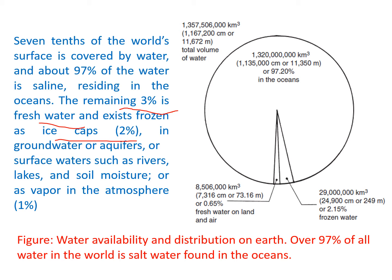This figure shows water availability and its distribution on the Earth's surface. We can see that 97% of Earth's water is saline or salty water residing in the ocean. Only 3% is fresh water, of which 2.15% is in frozen form as ice caps. Only 0.65% of water is fresh water on land and air, available for the survival of terrestrial and aquatic organisms.